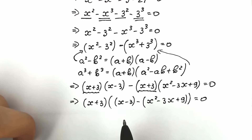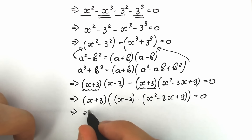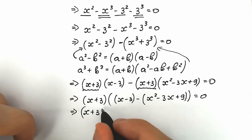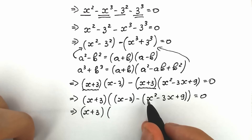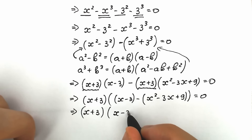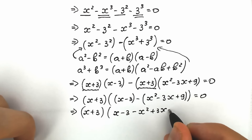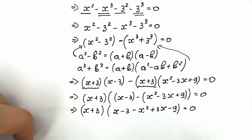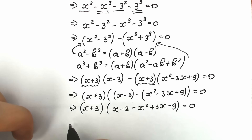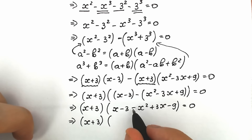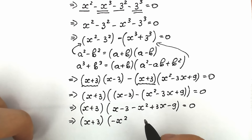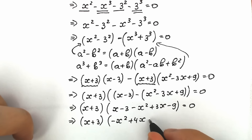Let's simplify the expression inside the second parentheses. We open the inner parentheses with a minus sign: x minus 3 minus x squared plus 3x minus 9, equal to 0. Simplifying: minus x squared, then 3x plus x gives plus 4x, then minus 3 minus 9 gives minus 12. So we have x plus 3 times minus x squared plus 4x minus 12 equal to 0.